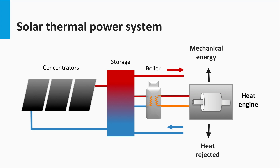These systems consist basically of a collector where the solar energy is absorbed, a storage system — usually water or phase change storage — a boiler that acts as a heat exchanger between the operational fluids of the collector and the heat engine, and the heat engine itself, which converts the thermal energy to mechanical energy. This mechanical energy can be further used in an electrical generator. Usually collectors include concentrator systems, to be able to reach the high temperatures that heat engines need to operate at.